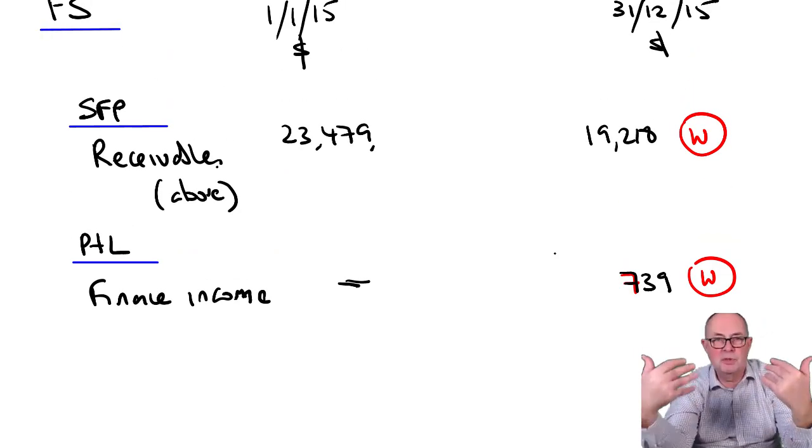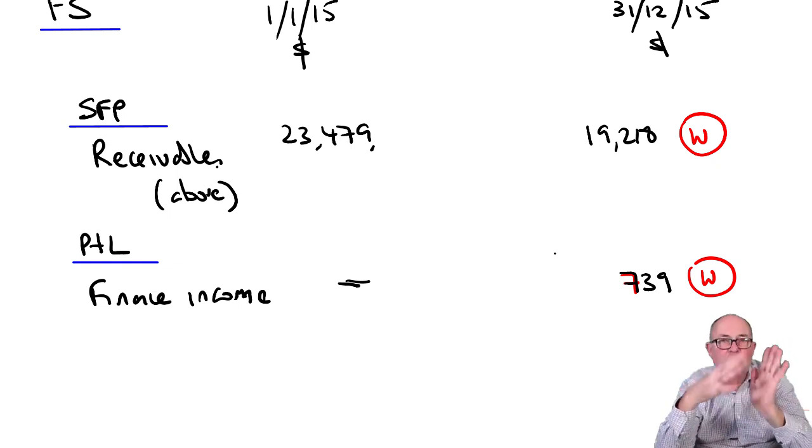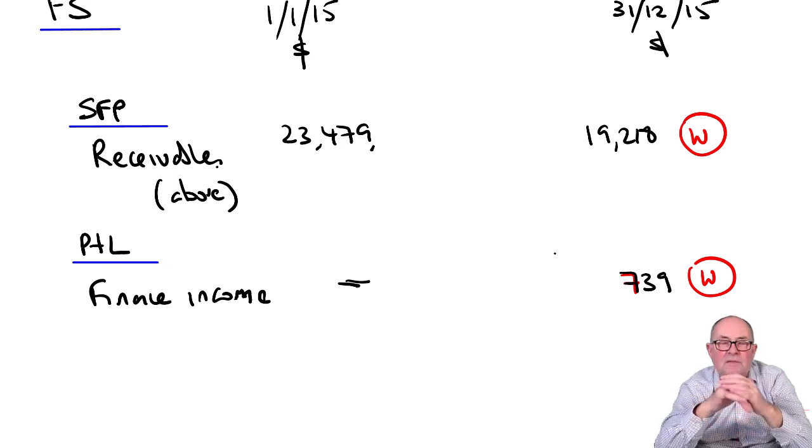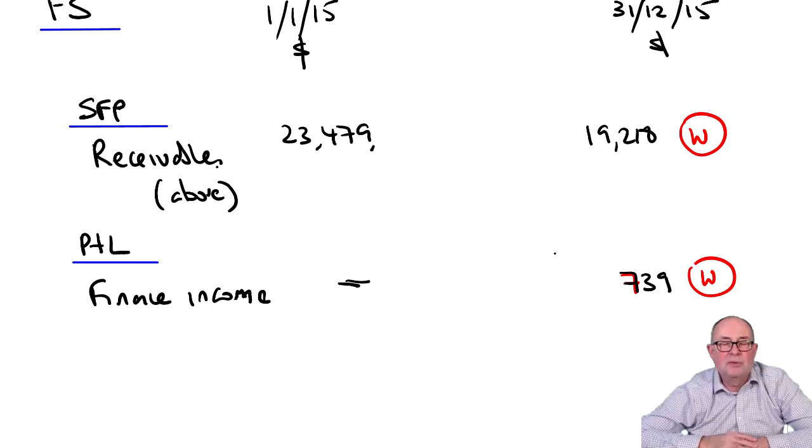Sometimes people say, well, should you split the receivable between less than a year, more than a year? Well, the prize winner will, and 5,000 is receivable within one year. I don't think you have time. I don't think it's something that would attract a lot of marks.